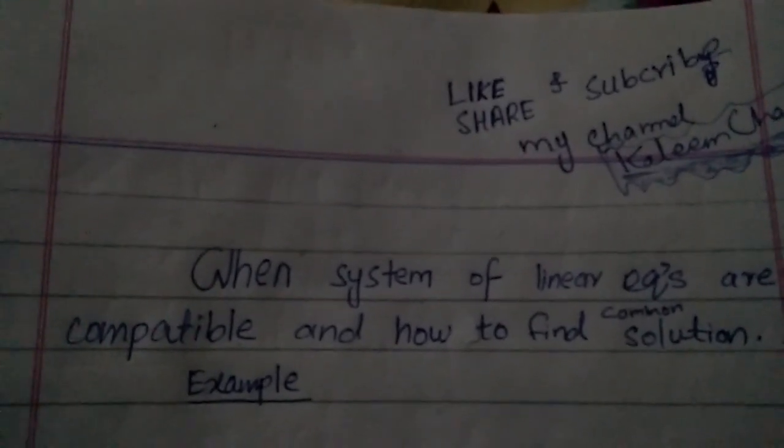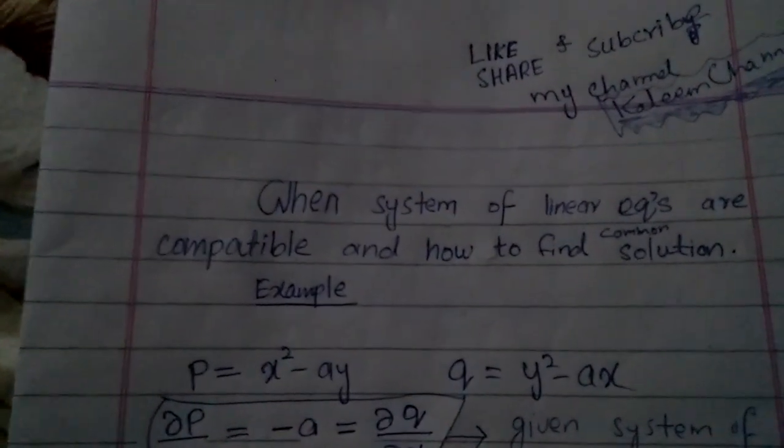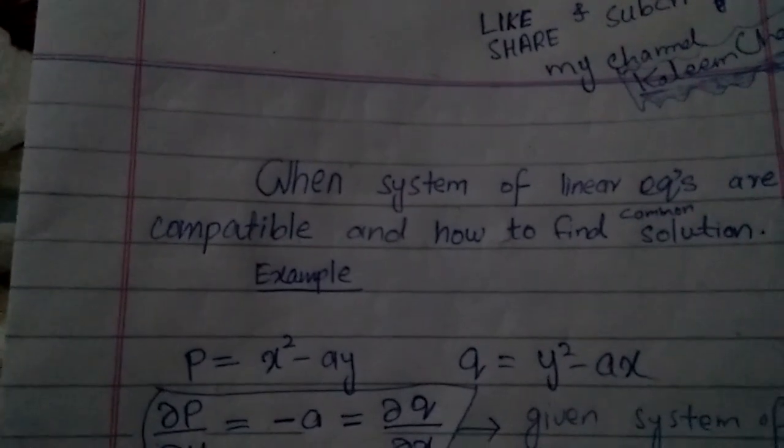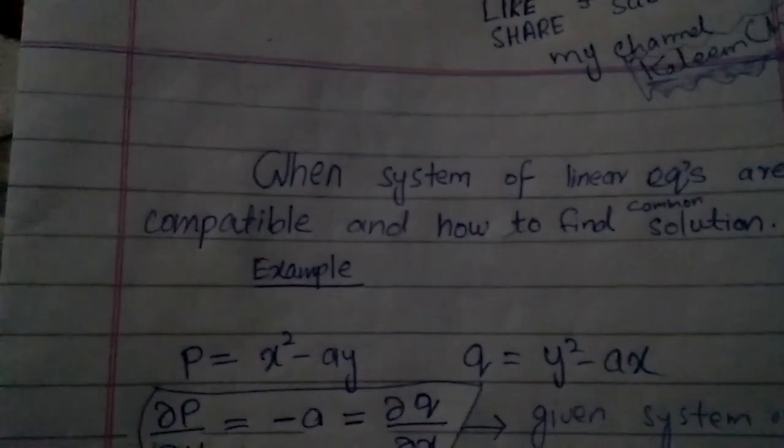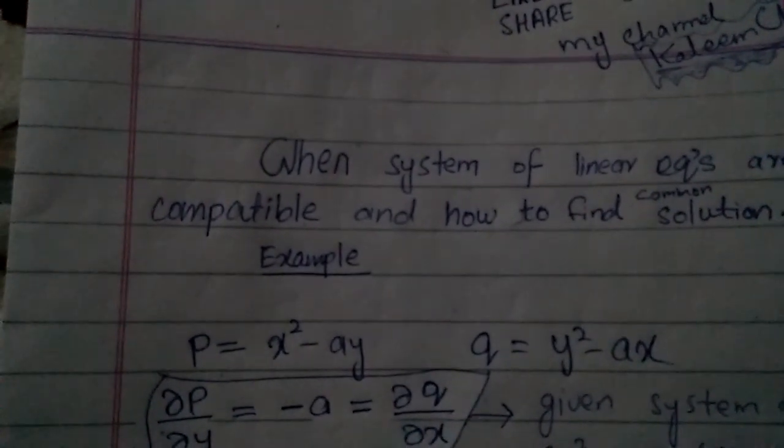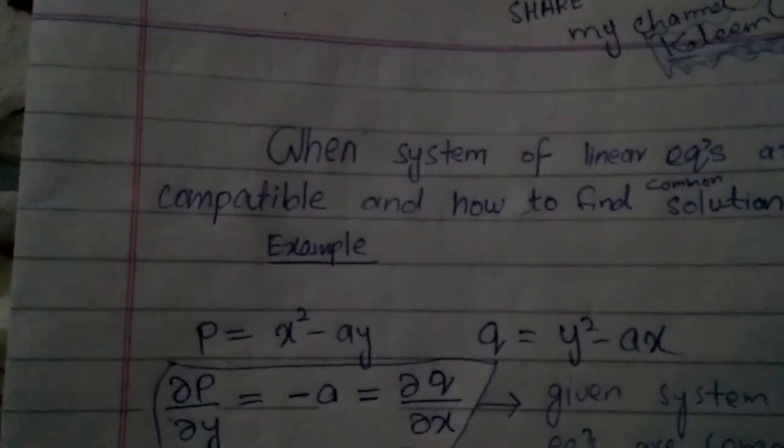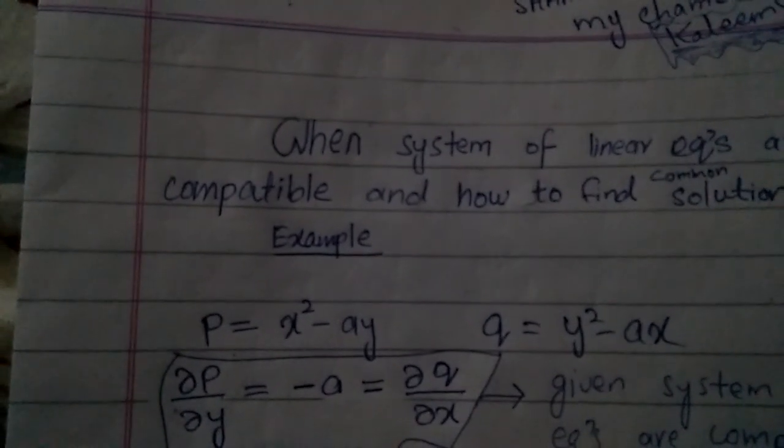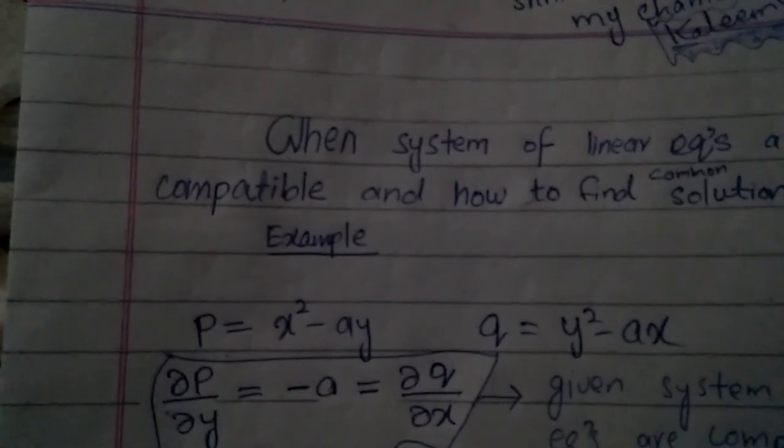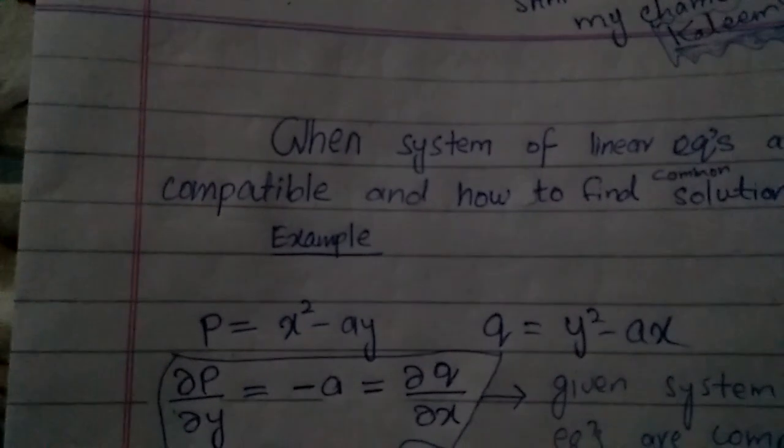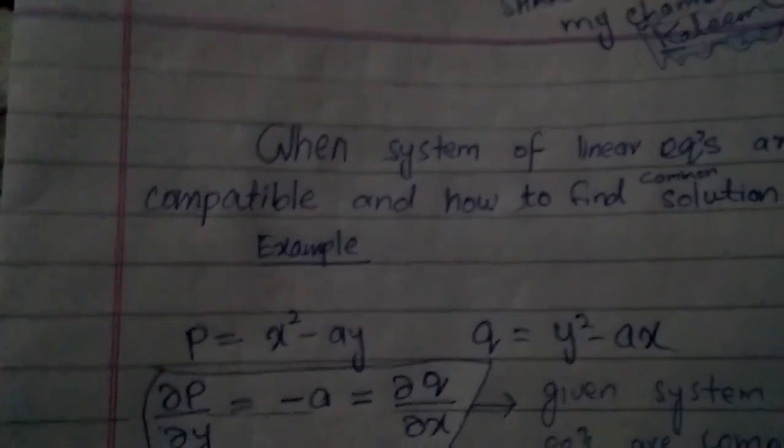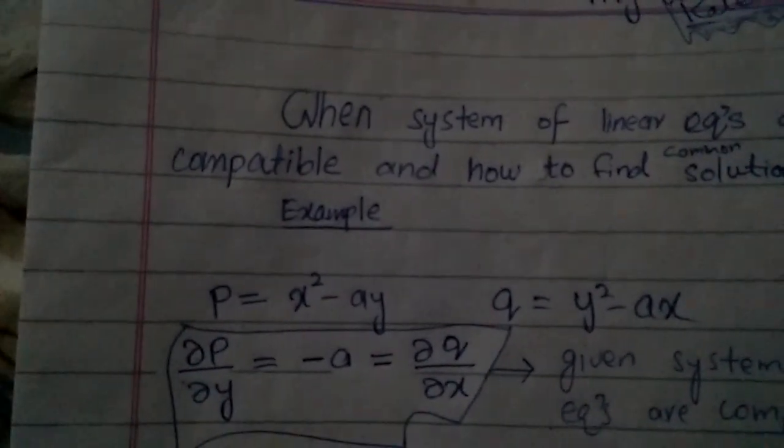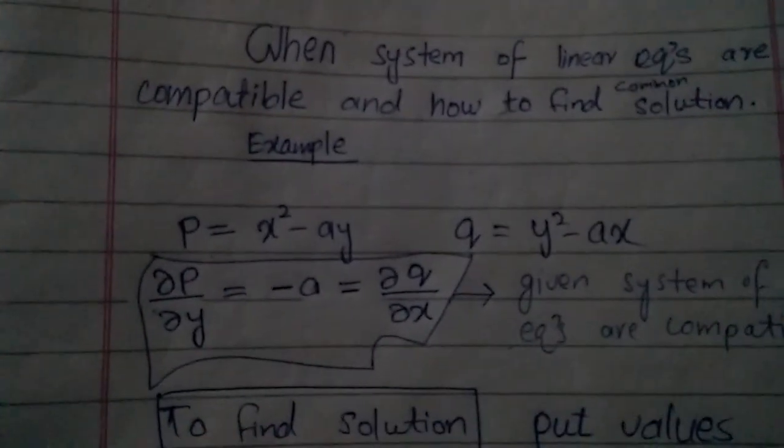If you have two linear equations, for example, we are given P is equal to x squared minus ay, and Q is equal to y squared minus ax. We have to differentiate partially with respect to y and x.